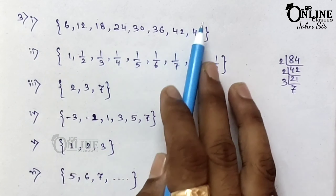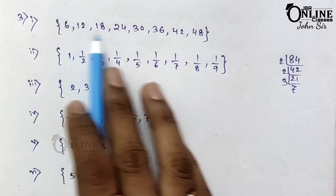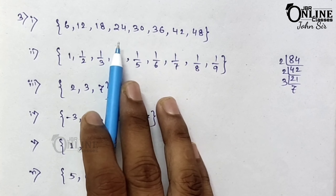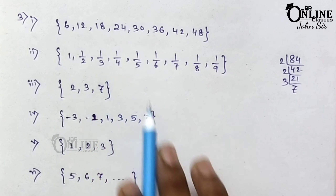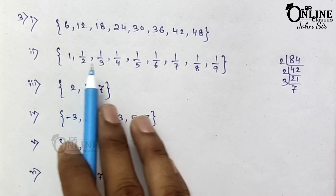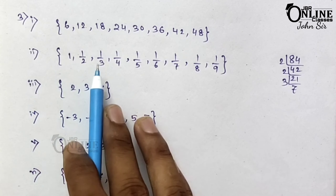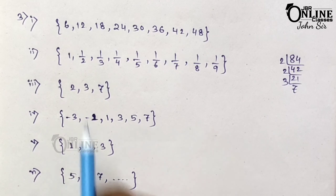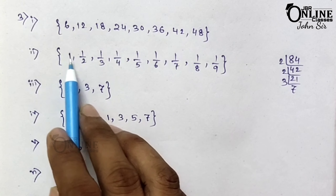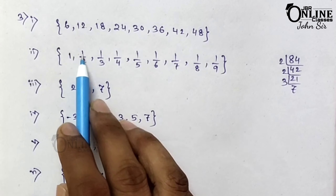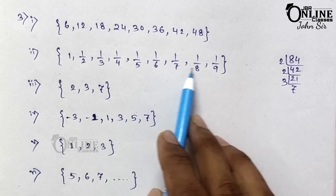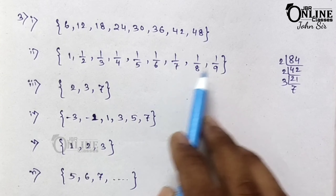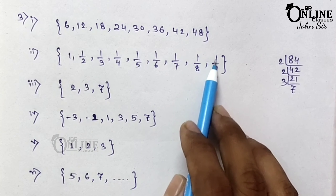In roster form, you have to put curly brackets and write each element inside. Number 2: the fractions whose numerator is 1 and whose denominator is a counting number less than 10. So the fractions are 1/1, 1/2, 1/3, and up to 1/9, since the condition is less than 10.